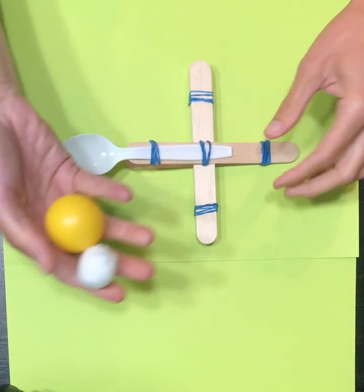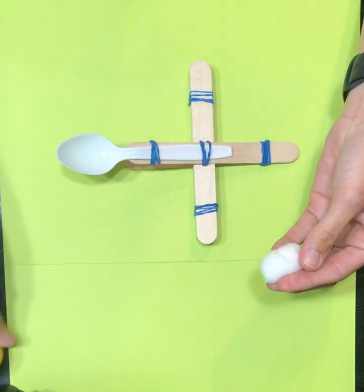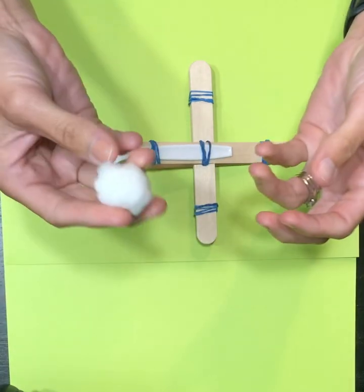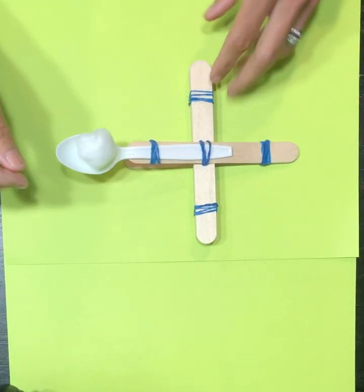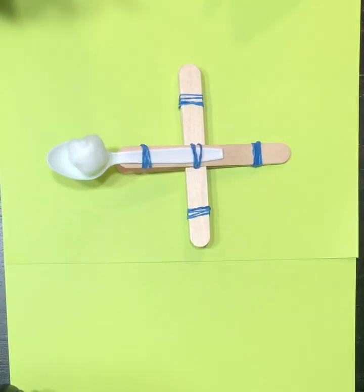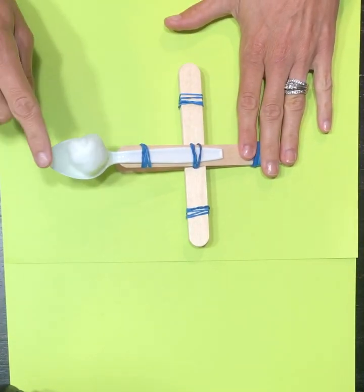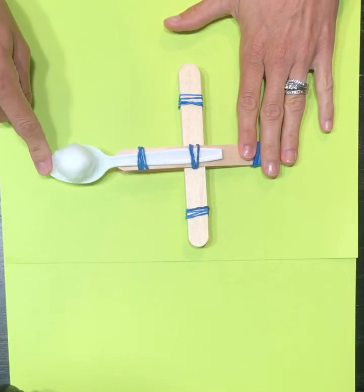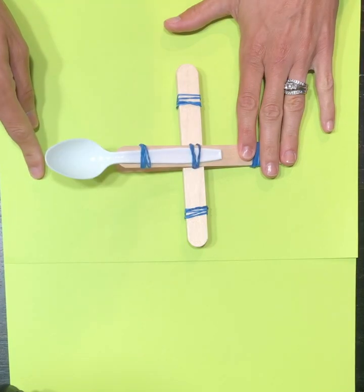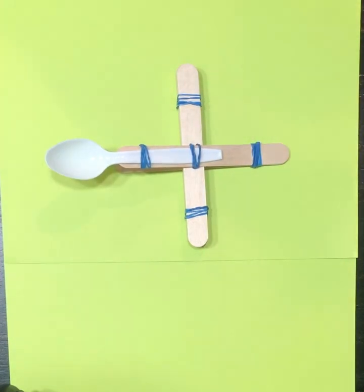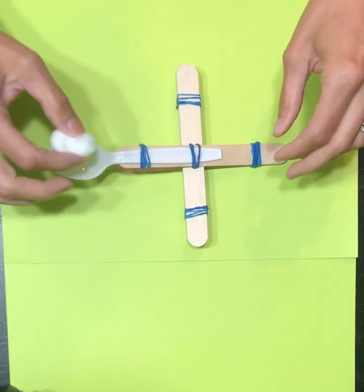So then this is where you'll take whatever projectile you're going to use. I'm for the purpose of this video just going to use a cotton ball because it's not going to roll across the floor. So what you're going to do is you're going to want to hold it down with one hand and then use your hand, pull back on the spoon. And when you let go, your projectile, whatever it is you're using, should kind of fling off into the air.